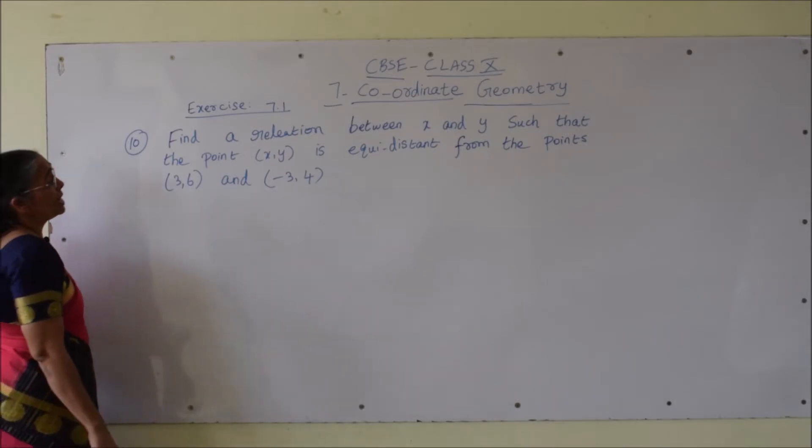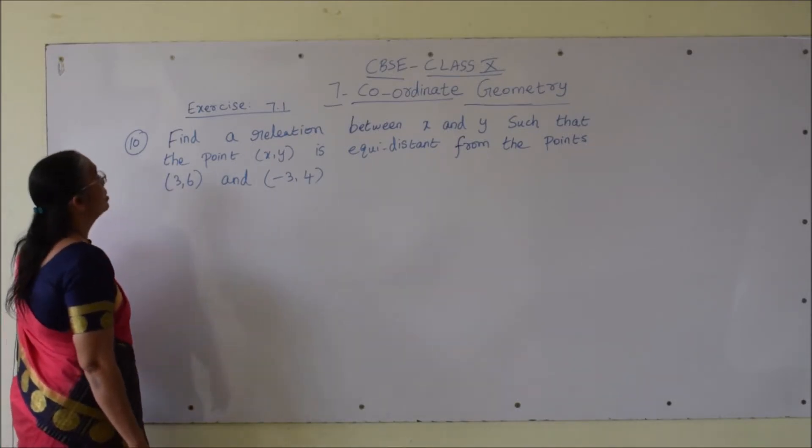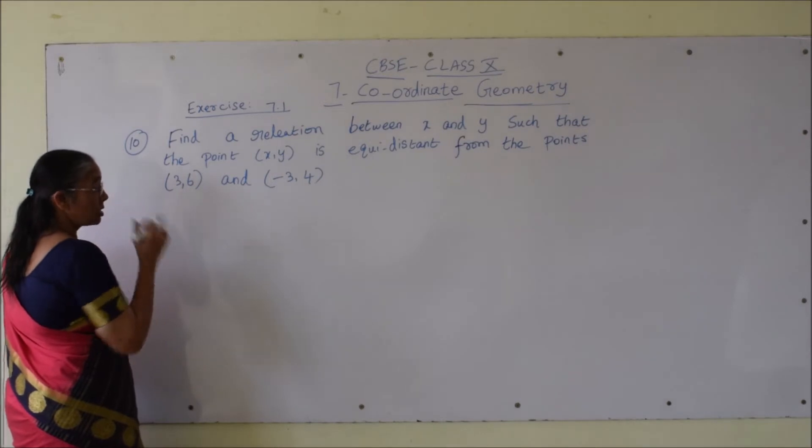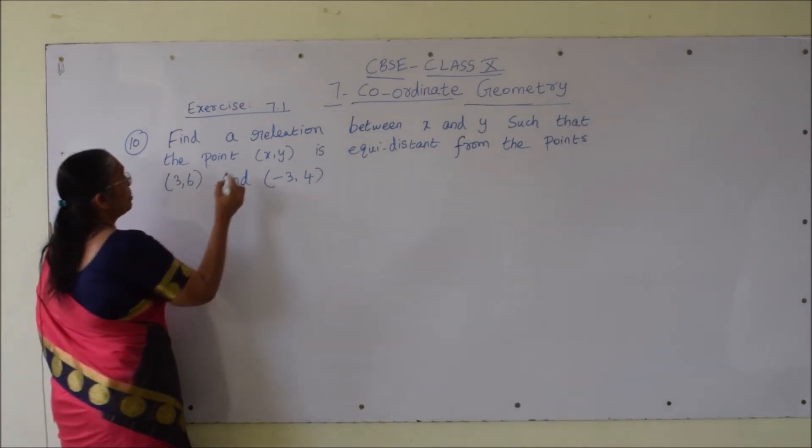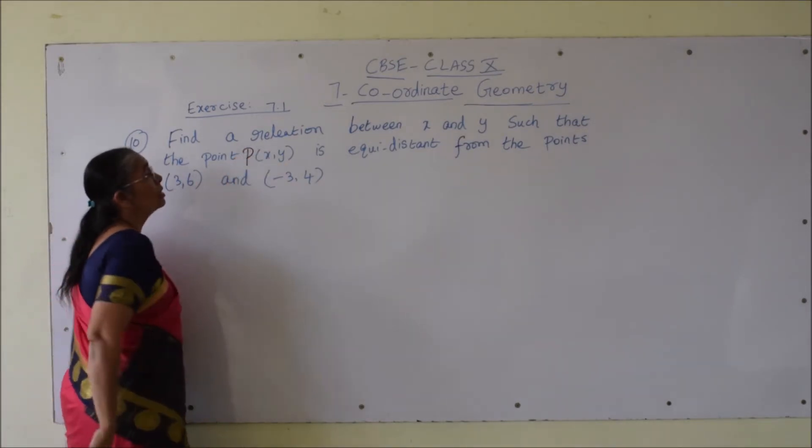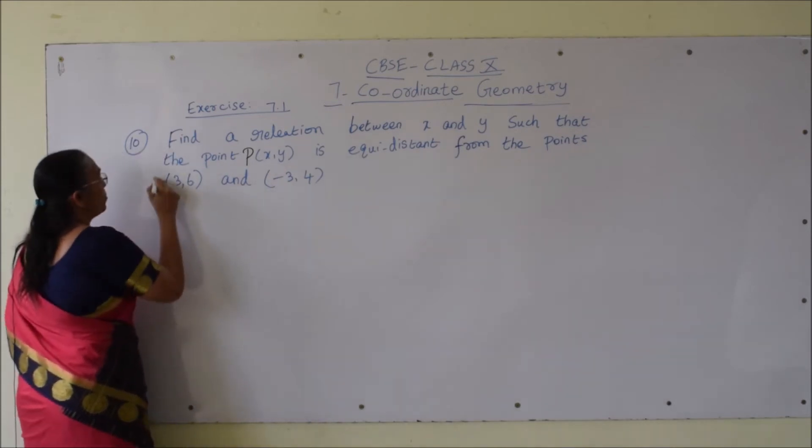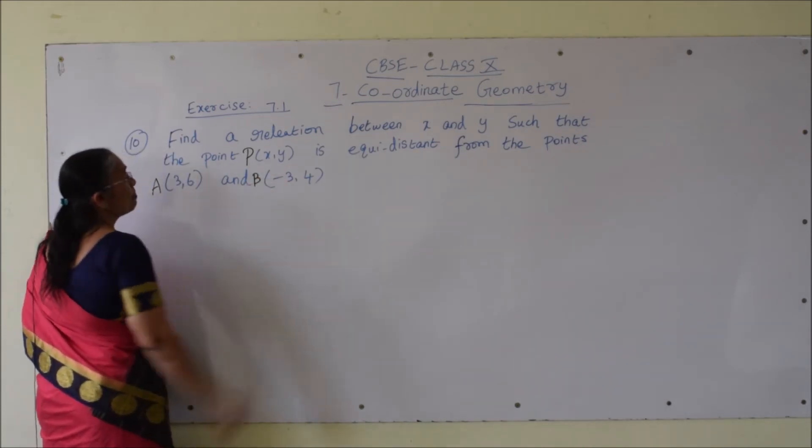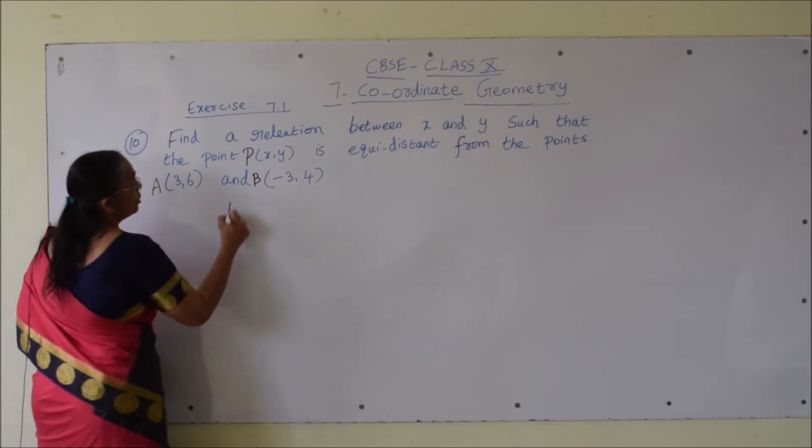Tenth problem: find a relation between x and y such that the point (x, y), so consider the point (x, y) as P, is equidistant from the points A(3, 6) and B(-3, 4).